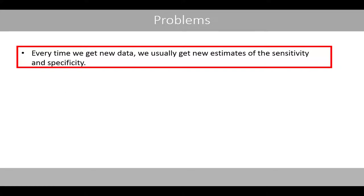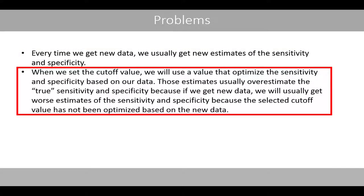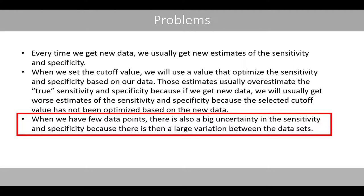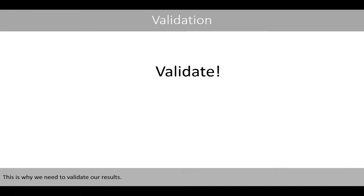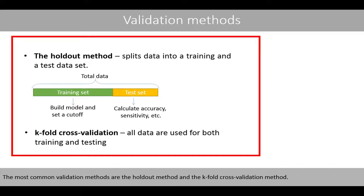Every time we get new data, we usually get new estimates of the sensitivity and specificity. When we set the cut-off value, we use a value that optimizes sensitivity and specificity based on our data. Those estimates usually overestimate the true sensitivity and specificity because if we get new data, we usually get worse estimates since the selected cut-off value has not been optimized based on the new data. When we have few data points, there is also large uncertainty because of the large variation between datasets. This is why we need to validate our results. The most common validation methods are the holdout method and the K-fold cross-validation method.